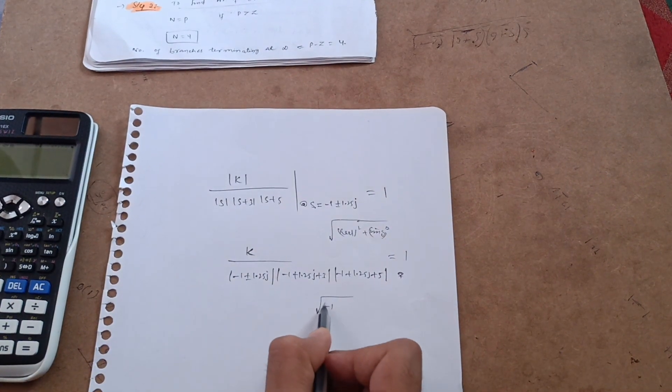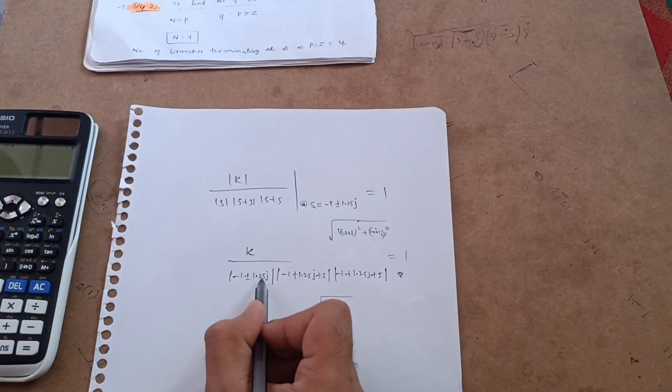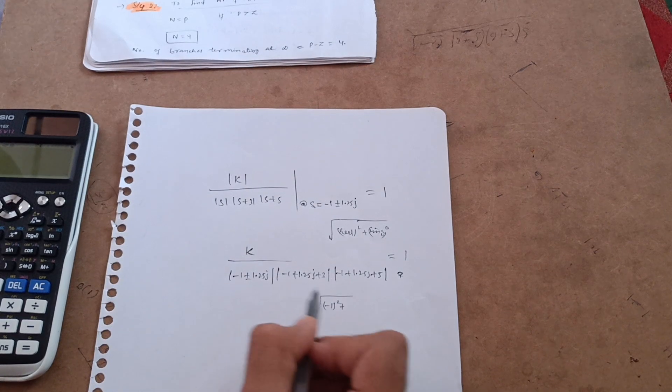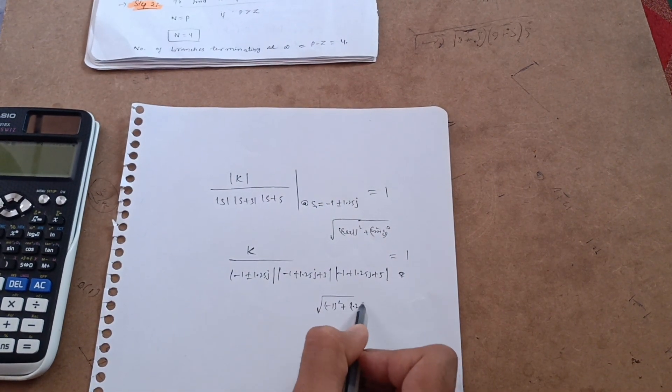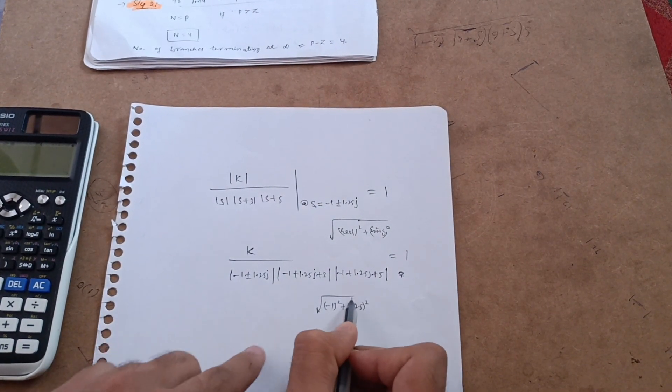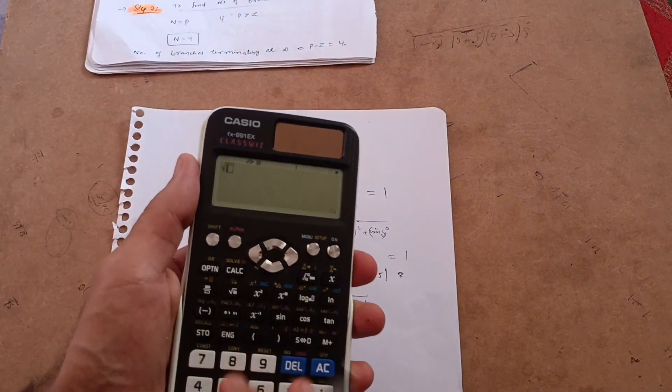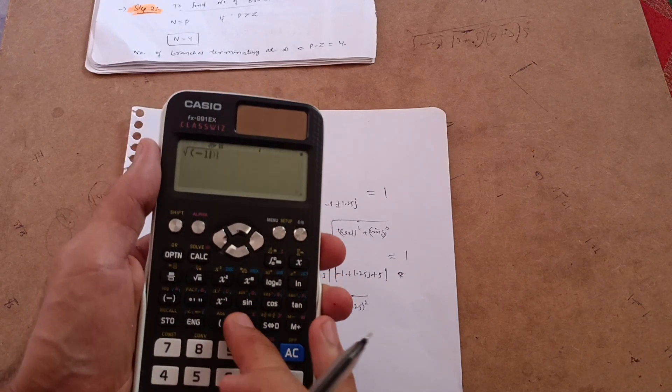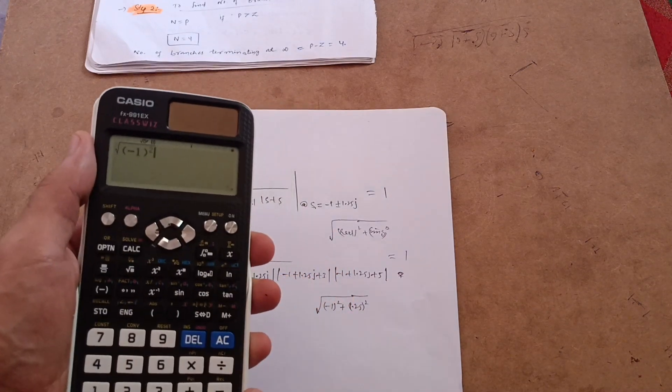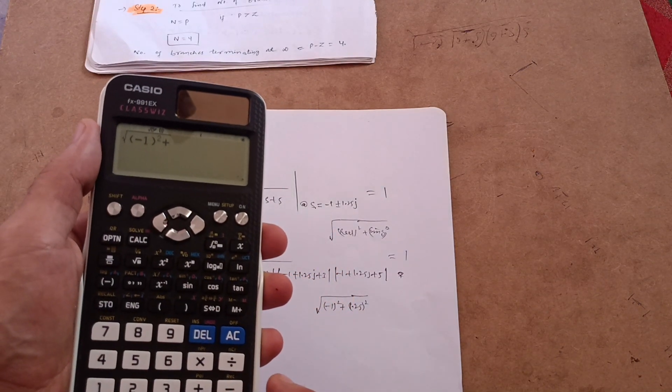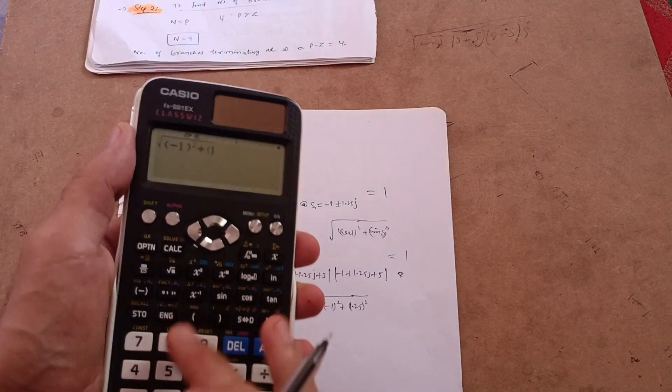In this term that is minus 1 whole square plus 1.25, this is the imaginary part, so you have to take 1.25 whole square. So you have to calculate this in calculator now. This is under root of minus 1 whole square, then plus 1.25, 1.25 whole square.